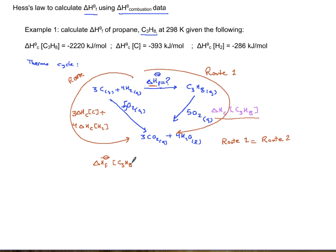So delta H formation of propane C3H8 plus delta H combustion of propane should equal route number two, which is simply three times delta H combustion of carbon plus four times delta H combustion of hydrogen.